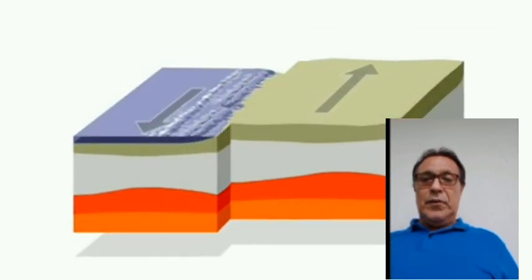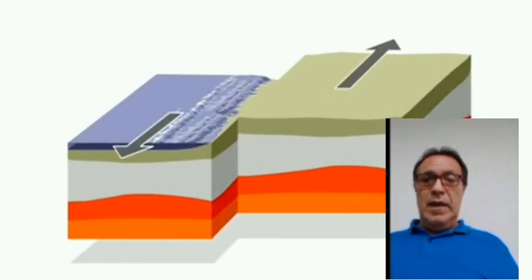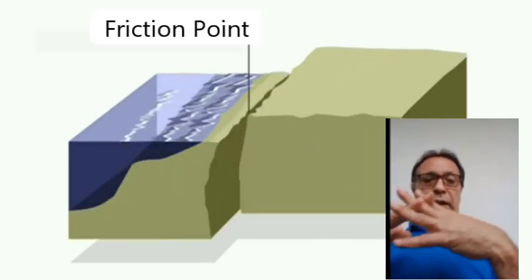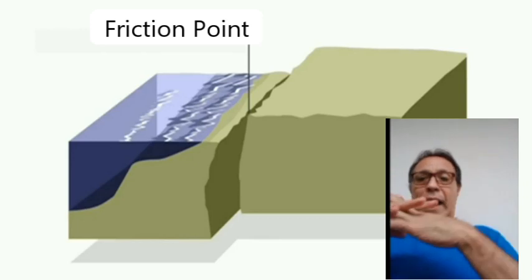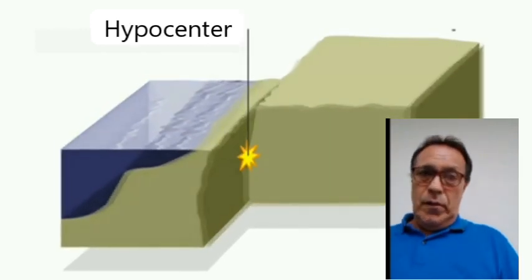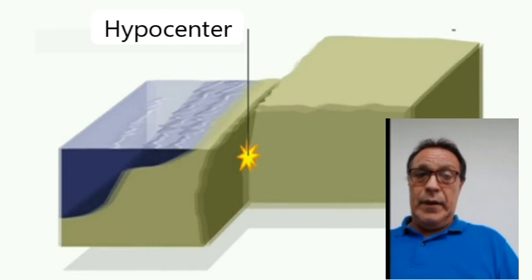These movements of the Earth's crust also give rise to earthquakes, since the friction between tectonic plates produces seismic waves that are transmitted to the surface, sometimes with terrible effects.